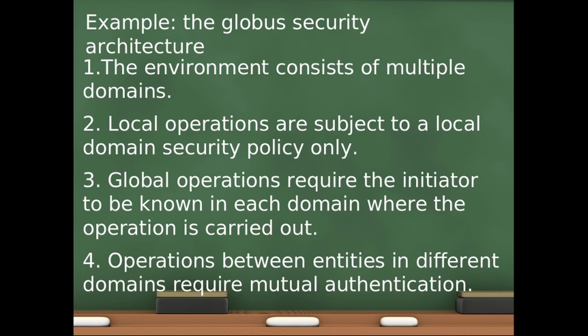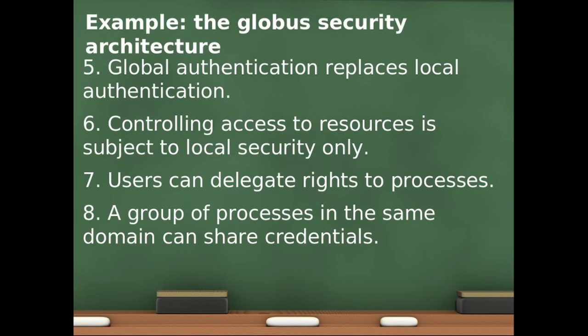The eight statements of the global security architecture are: the environment consists of multiple domains; local operations are subject to local domain security policy only; global operations require the initiator to be known in each domain where the operation is carried out; operations between entities in different domains require mutual authentication; global authentication replaces local authentication; controlling access to resources is subject to local security only; users can delegate rights to processes; and a group of processes in the same domain can share credentials.